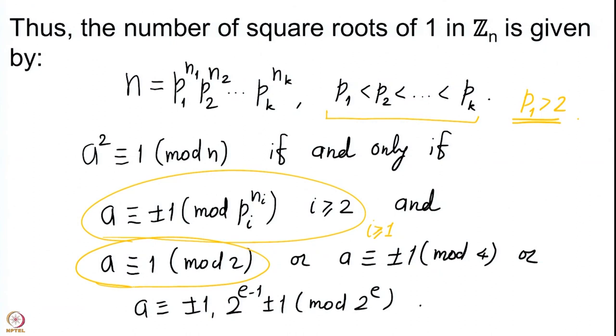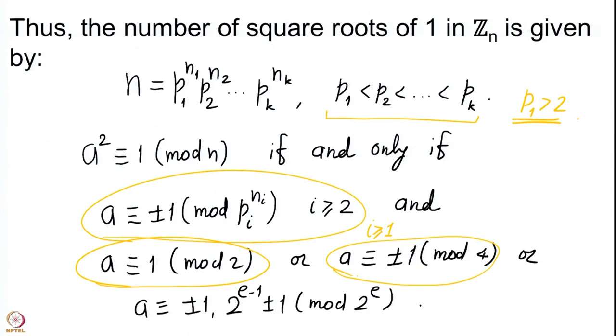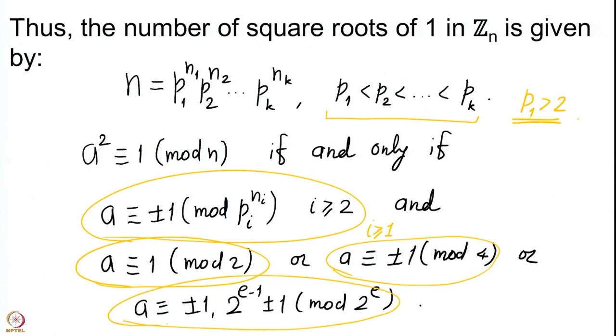When 2 divides n there are three sub-cases. If 2 divides n but 4 does not: the factor of 2 contributes only 1 congruence (a ≡ 1 mod 2), while the k−1 odd primes each contribute 2 choices, giving 2^{k−1} solutions. If 4 divides but 8 does not: the factor of 4 behaves like an odd prime power giving 2 choices, so total is 2^k solutions. If 8 divides n: the power of 2 contributes 4 congruences, giving 2^{k+1} solutions.